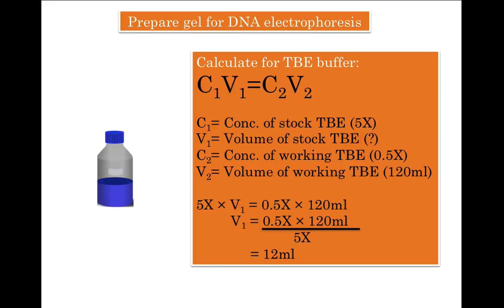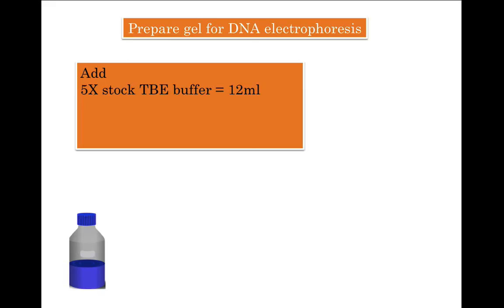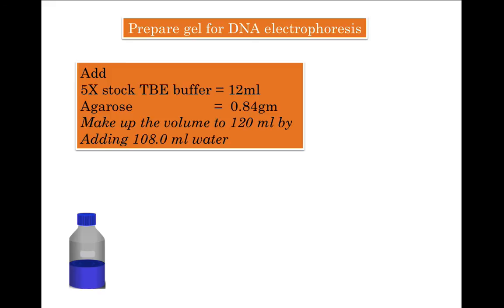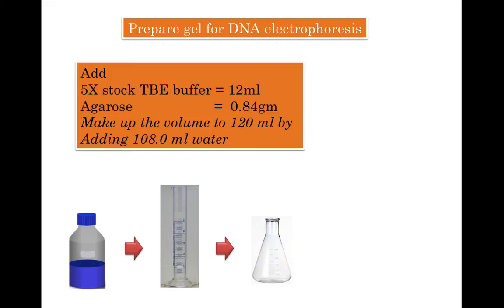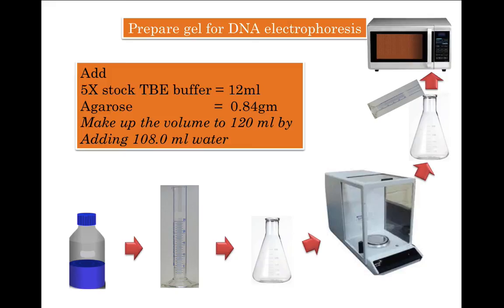So you need to take 12 ml of the 5x stock TBE buffer and make up the volume to 120 ml by adding water. To make the gel: take the 5x stock TBE buffer, aliquot 12 ml into a measuring cylinder, add 108 ml of water to make up the volume to 120 ml. Then weigh 0.84 grams of agarose, put it in a flask, add the buffer you just made, and microwave to dissolve. Let's do it!